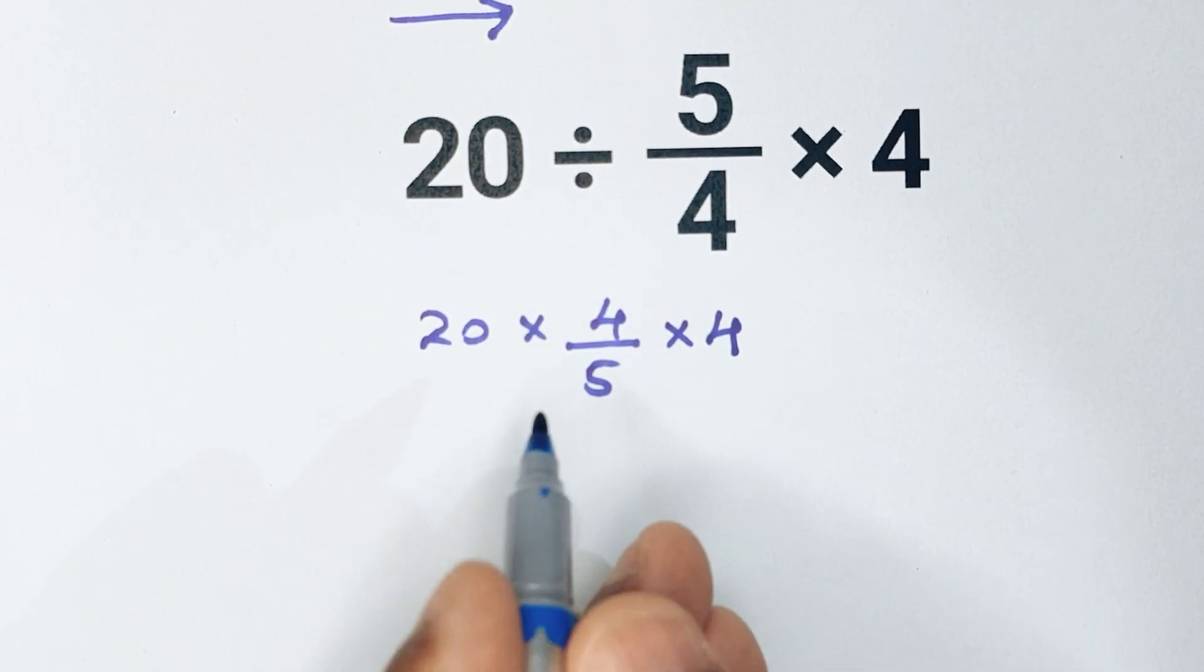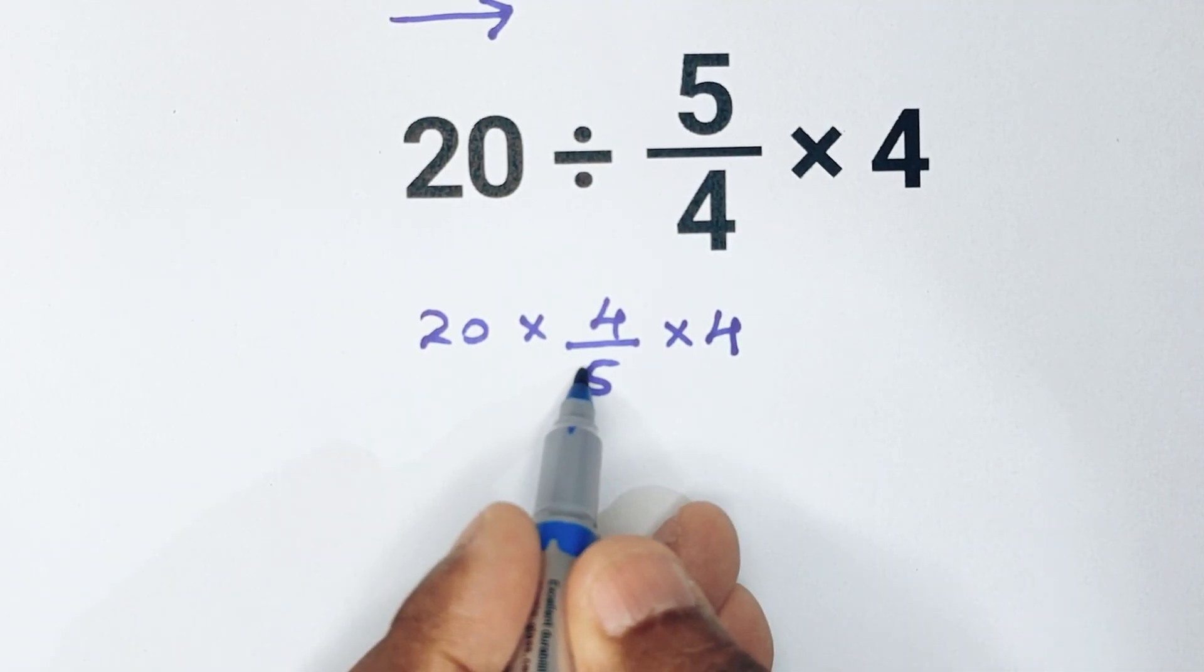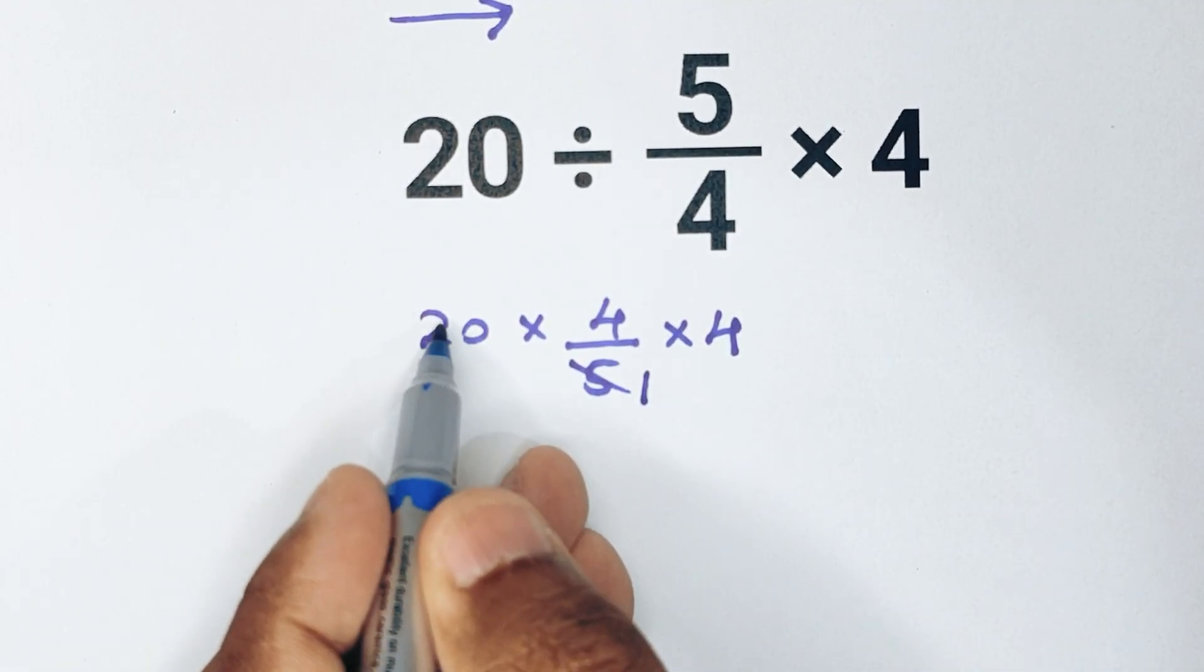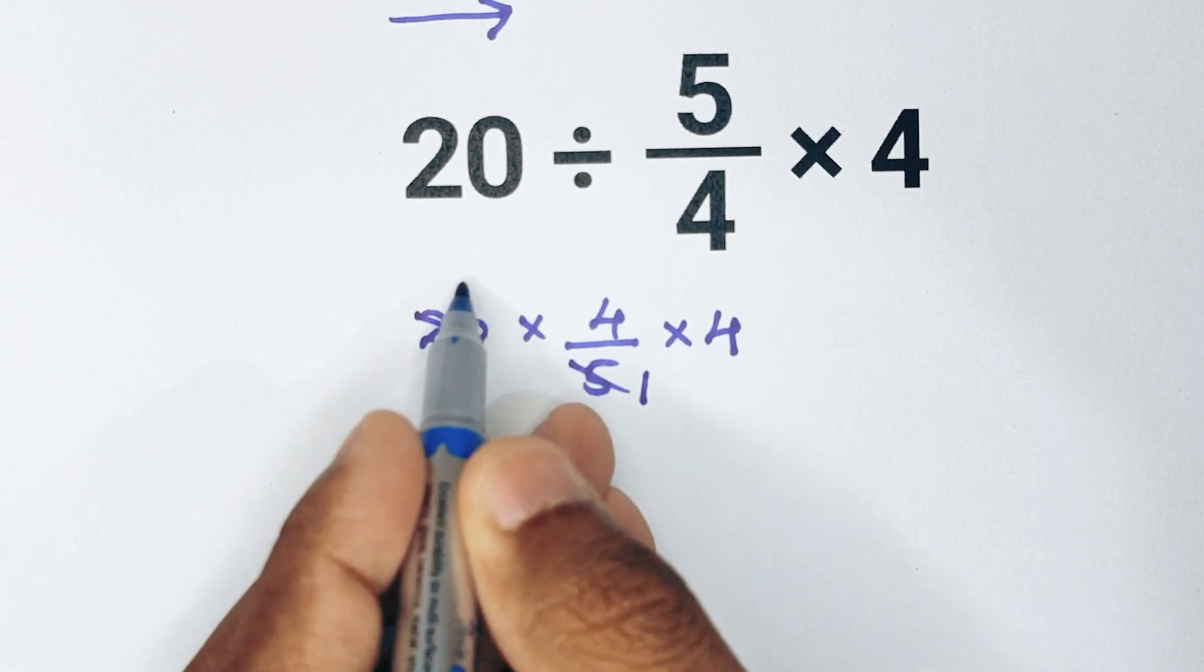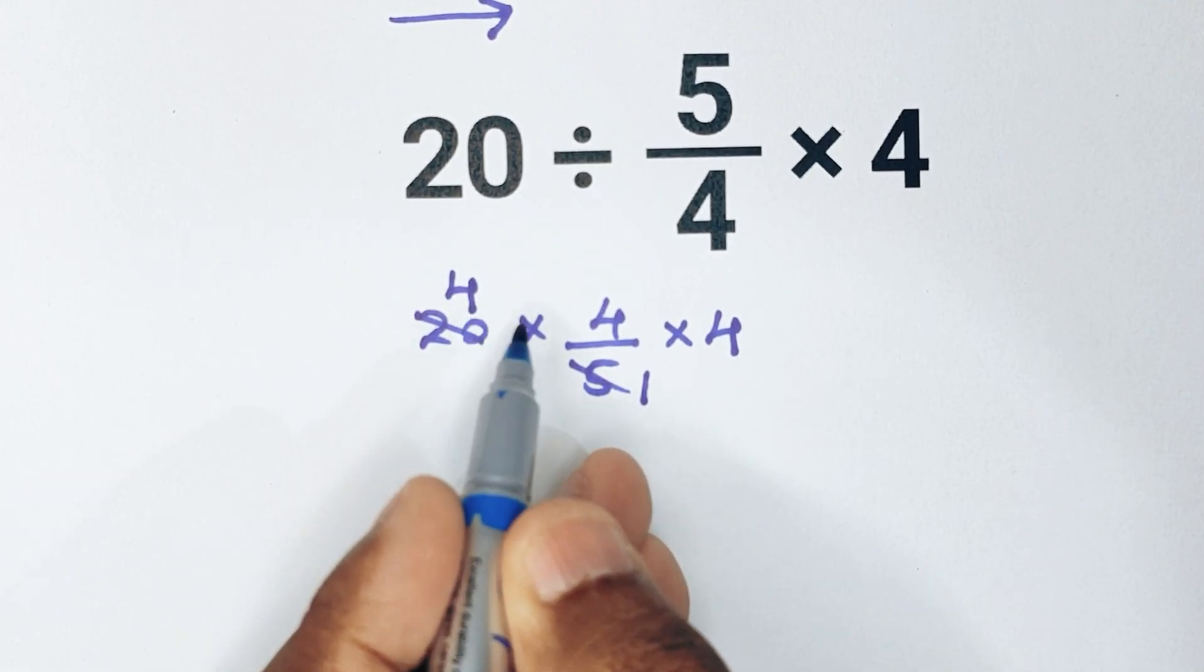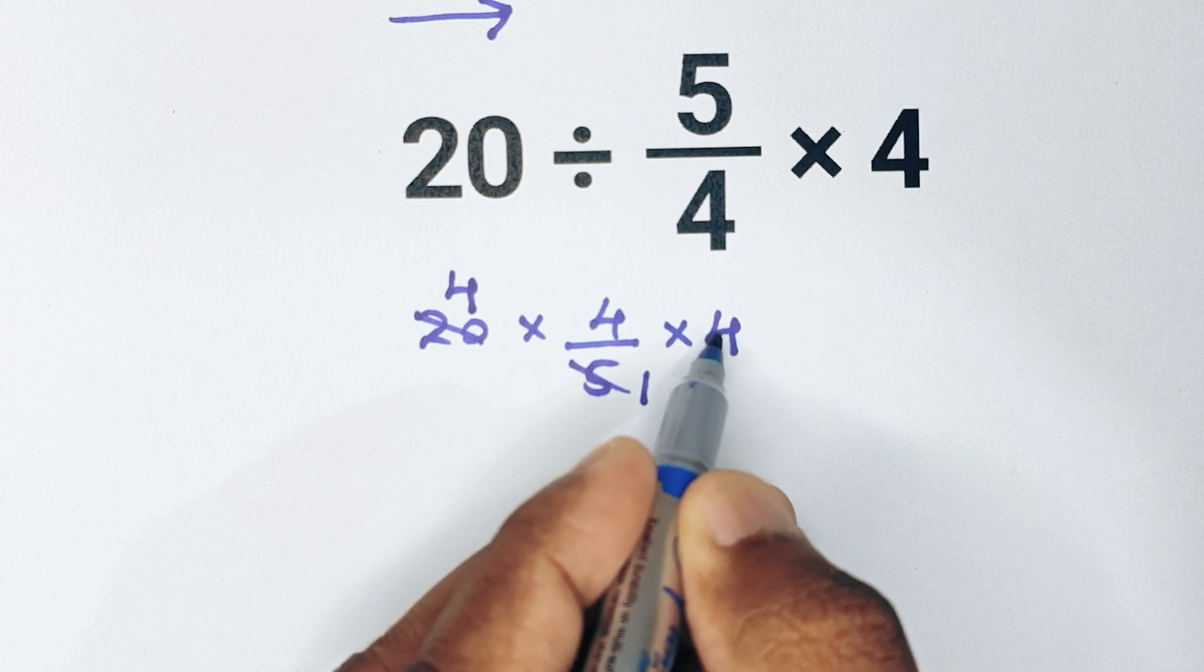Now we can simplify. 5 over 5 is 1, and 20 over 5 is 4, so now we have 4 times 4 times 4.